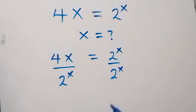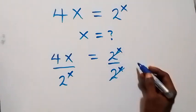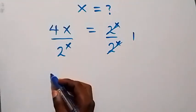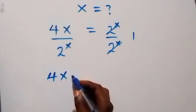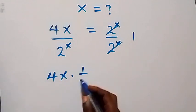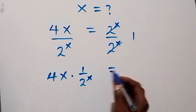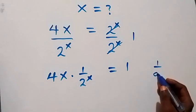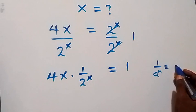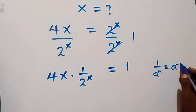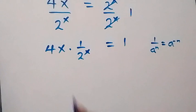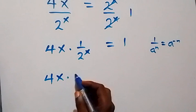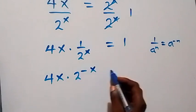This cancels out and gives us 1. Then on this side we can rewrite this as 4x times 1 over 2 raised to power x, now equals to 1. From when we have 1 over a raised to power n, we can write this as a raised to power minus n. So here this can be written as 4x times 2 raised to power minus x, now equals to 1.